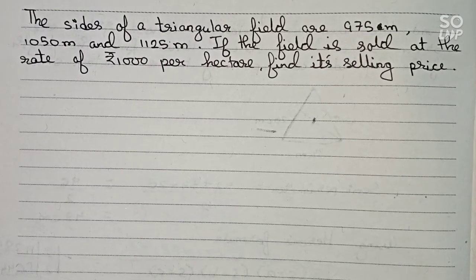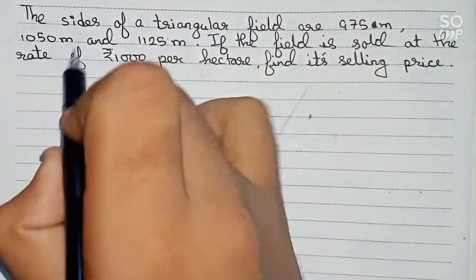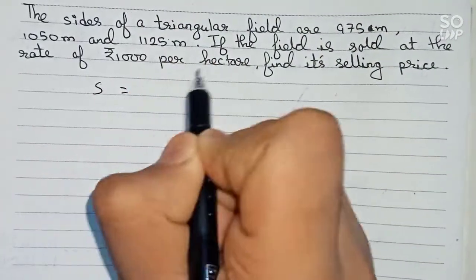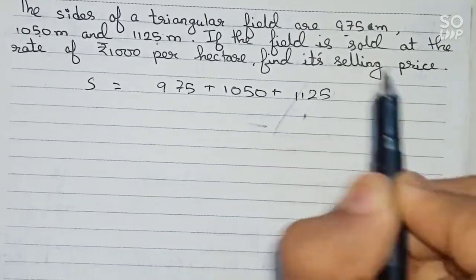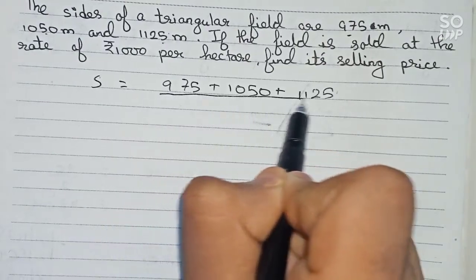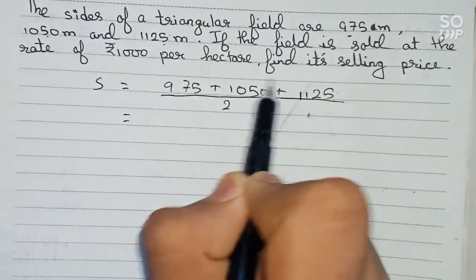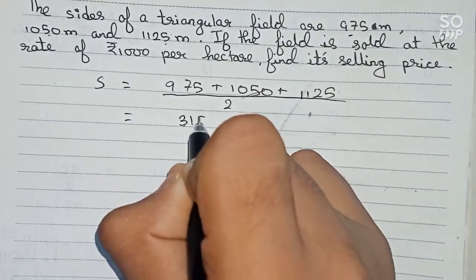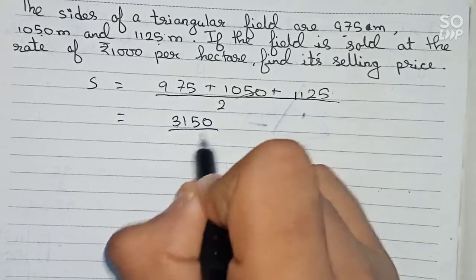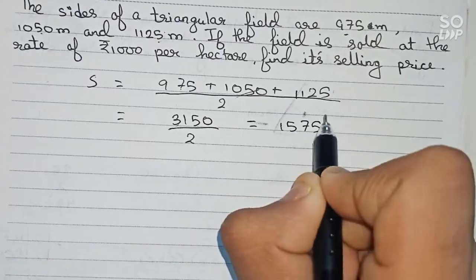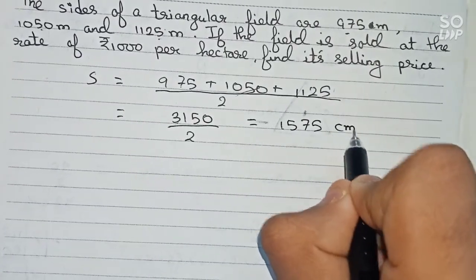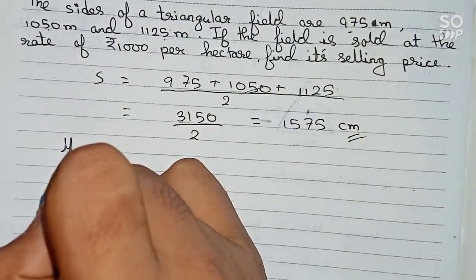For area, first we will find out the semi-perimeter. So s is equal to semi-perimeter, which means the addition of all three sides divided by two. That means 975 plus 1050 plus 1125 divided by two. So the addition will become 3150, so now it is divided by two. Divided by two it becomes 1575 centimeters.